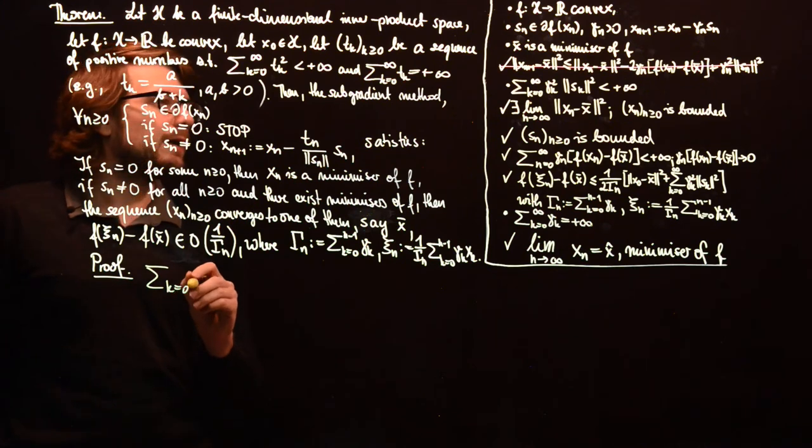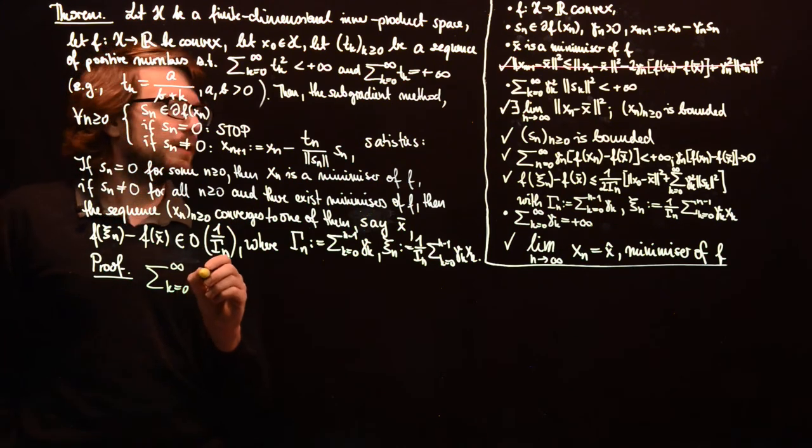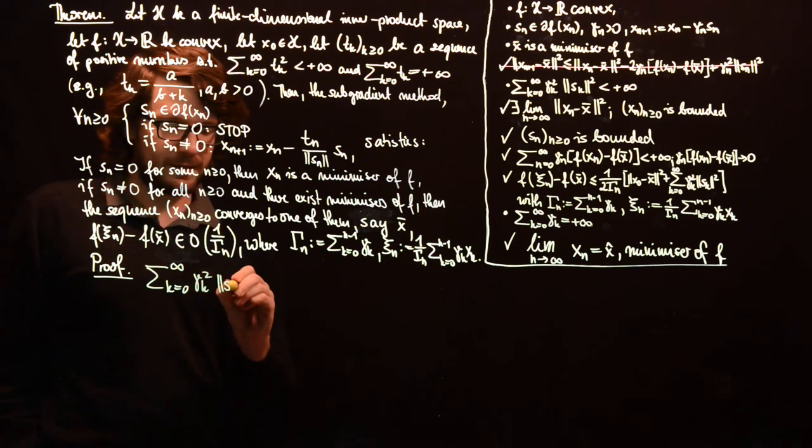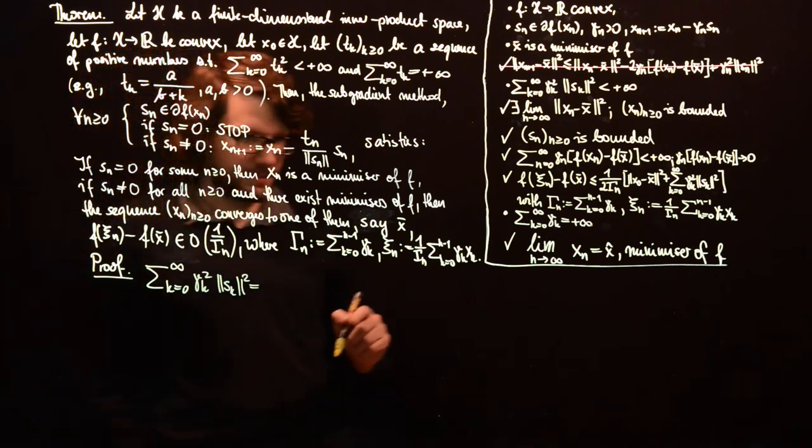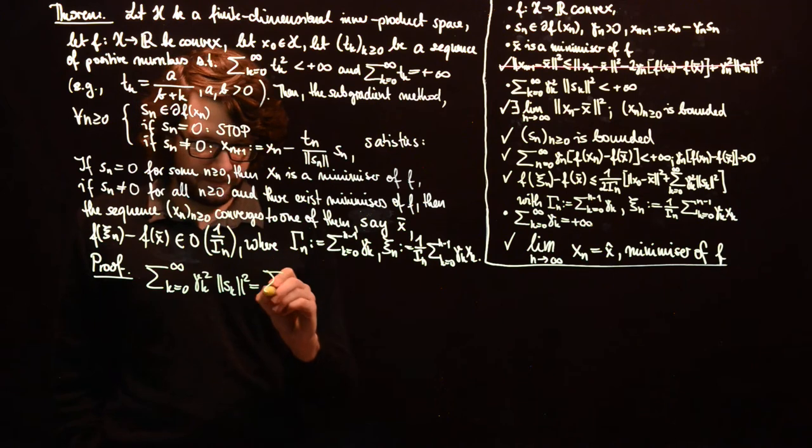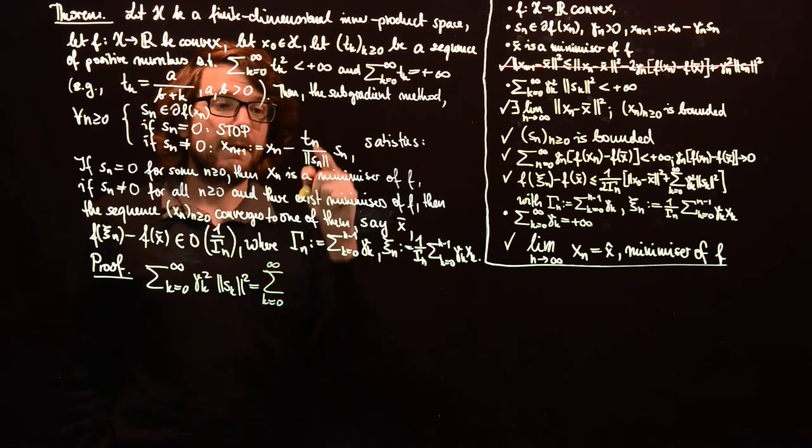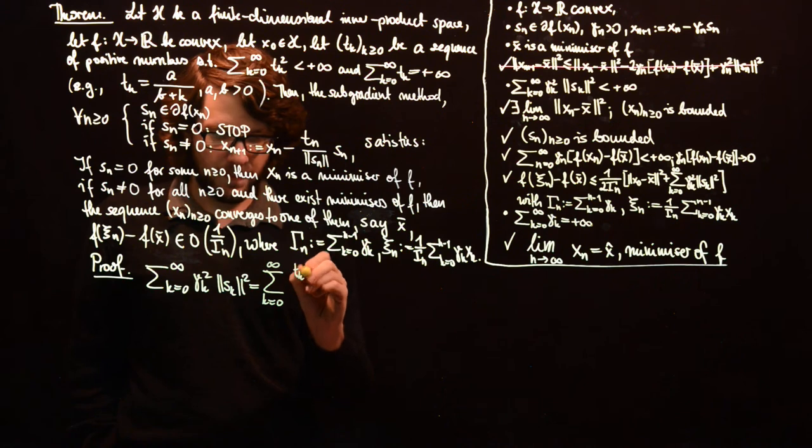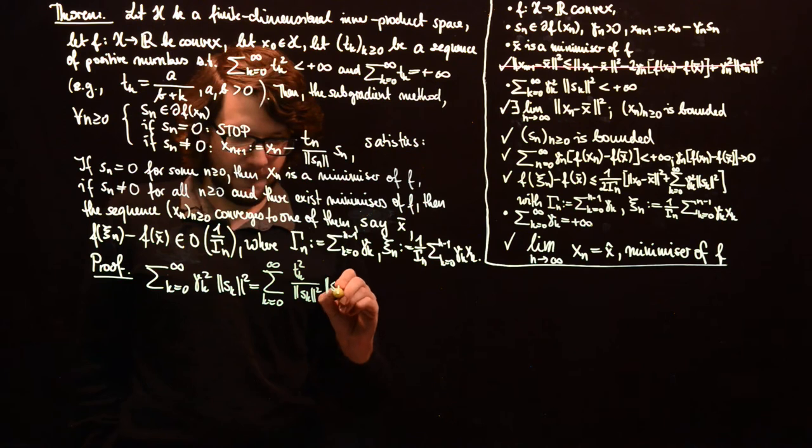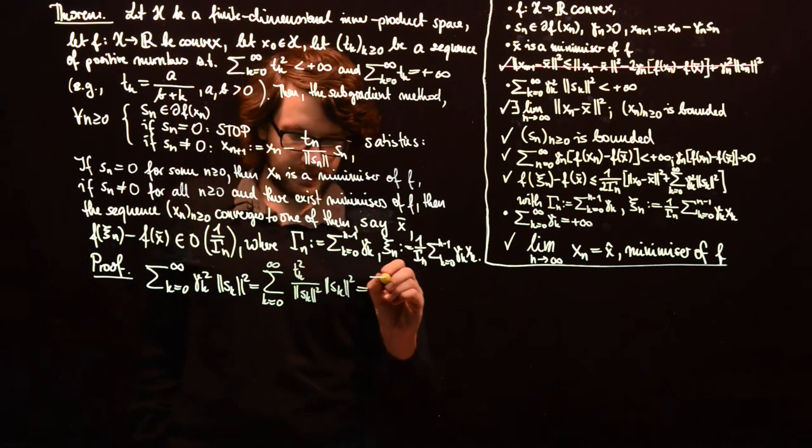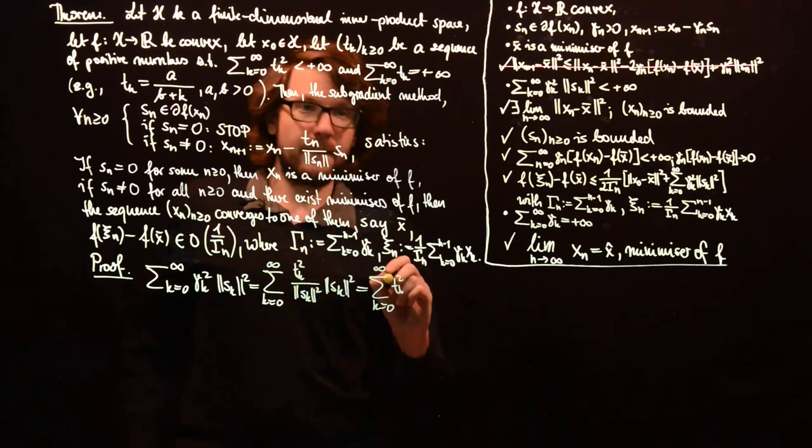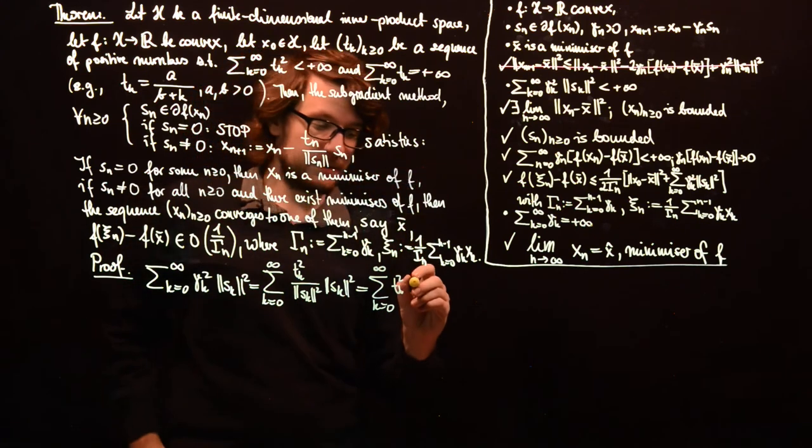And then we have, obviously, sum k from 0 to infinity, gamma_k squared norm of s_k squared. And this is, since we have set gamma_k to t_k over norm s_k, this is just the sequence of t_k squared.